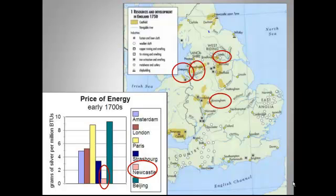I'm going to give you a lot of help putting together an answer, starting here. You saw this map and graph before. Together they give one explanation for England taking the lead: Britain had lots of coal, and it could get to that coal easily and cheaply. Major industrial cities grew up near coal fields, and you have statistics in your notes about how quickly those cities grew. You also see that coal was particularly inexpensive in Newcastle, the one English city listed here.